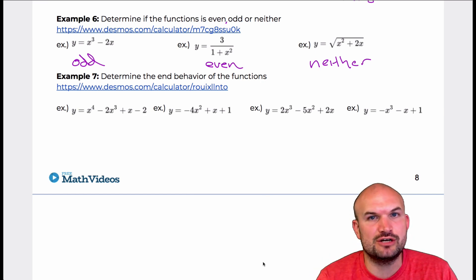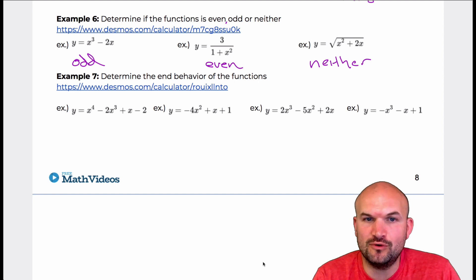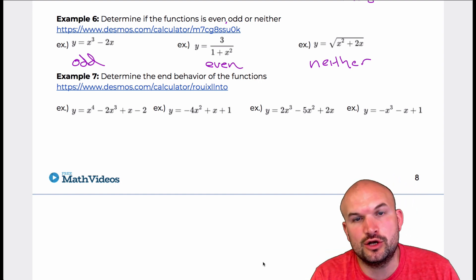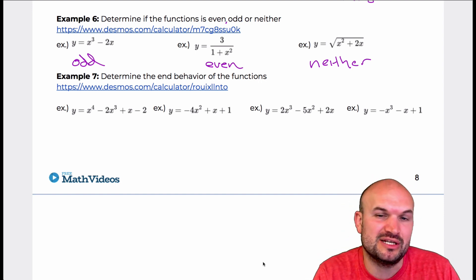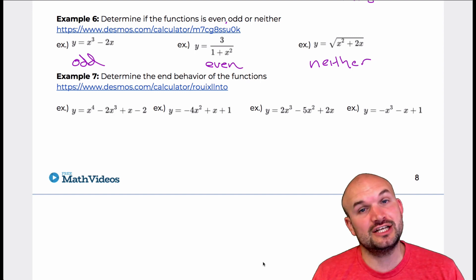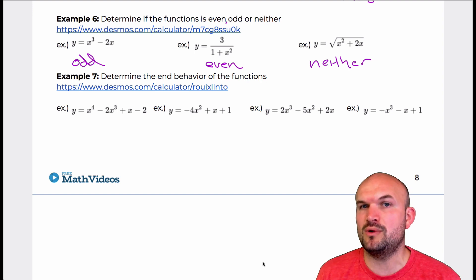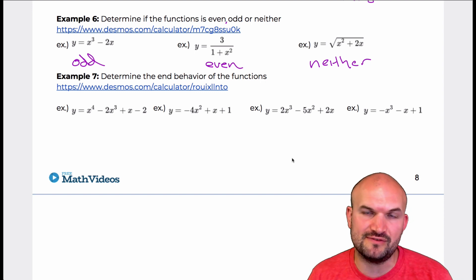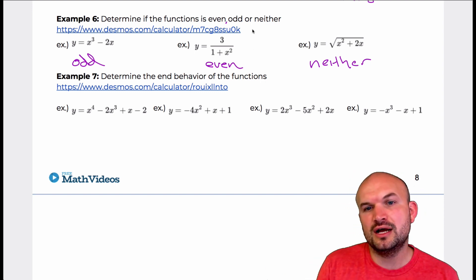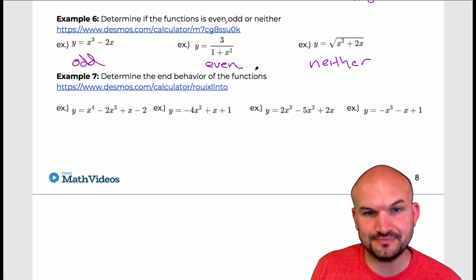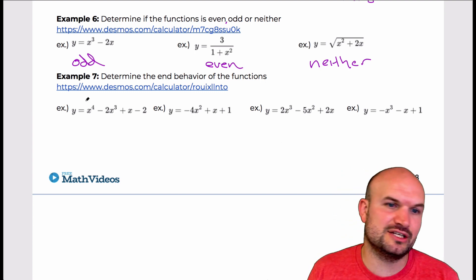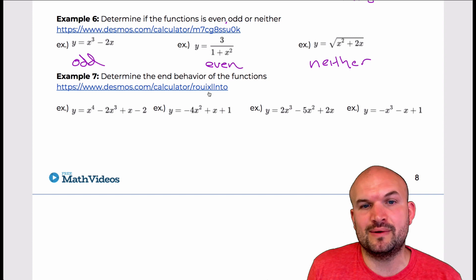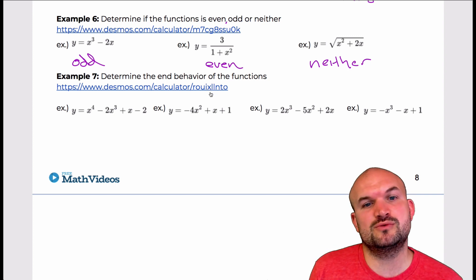The last example I want to cover today is determining end behavior. Rather than just looking at a graph approaching a horizontal asymptote, I want to look at polynomials because this comes up in the next chapter. I want to make that connection now so that when we get there it will be a little easier to understand. I'm deciding to work only on polynomials in this case, determining where the graph is going.